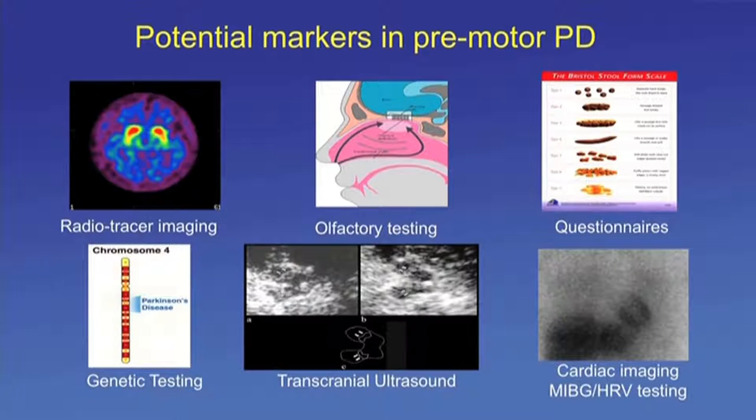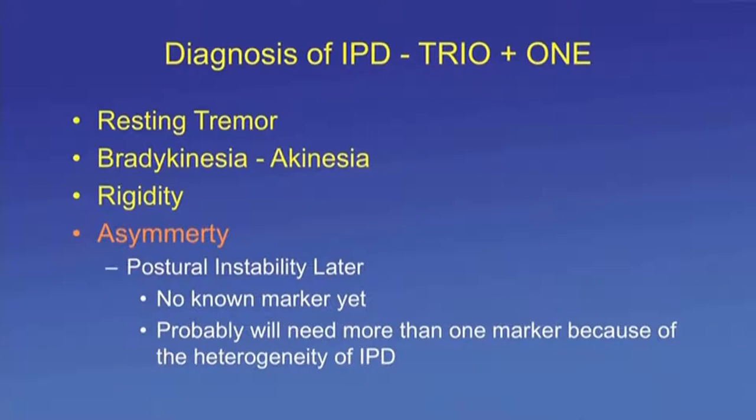The diagnosis of idiopathic Parkinson's disease is a trio plus one: resting tremor, bradykinesia or akinesia, rigidity, asymmetry, and postural instability — which occurs later. Early falling and gait disorder likely indicate atypical Parkinsonism rather than idiopathic Parkinson's. There are no specific markers yet, but potential markers include constipation, loss of smell, depression, and REM behavior disorder. Biochemical and molecular markers are rapidly being investigated, and we'll likely need more than one marker given the heterogeneity of the disease.